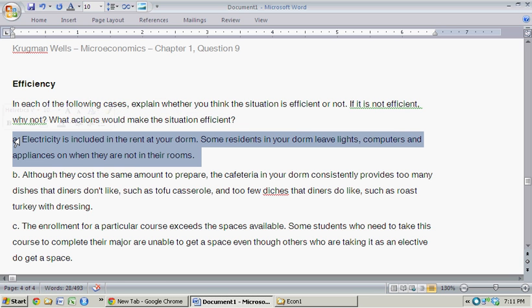Electricity is included in the rent at your dorm. Some residents in your dorm leave lights, computers, and appliances on when they are not in their rooms. So, I'm pretty sure they're getting at that this situation is not efficient. So, the cost of electricity is included in one's rent, but it's kind of included on average for everyone.